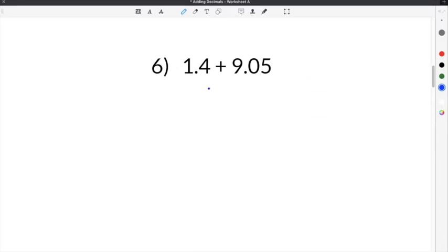Number 6 on our adding decimals worksheet gives us 1.4 plus 9.05. Again we're going to write the numbers vertically so that we can add them and we're going to line the decimal points up.